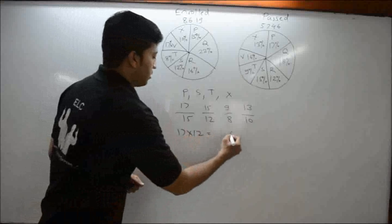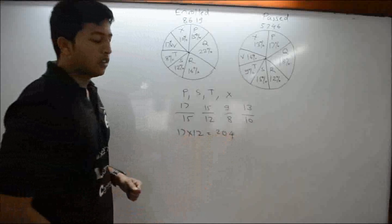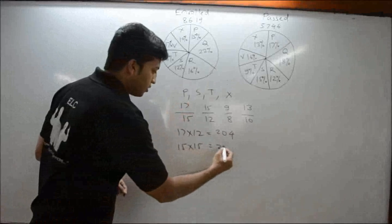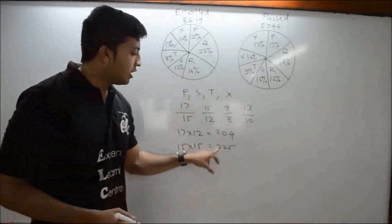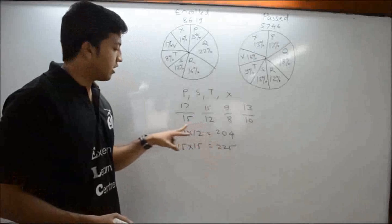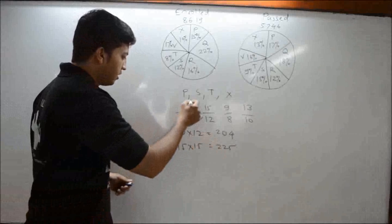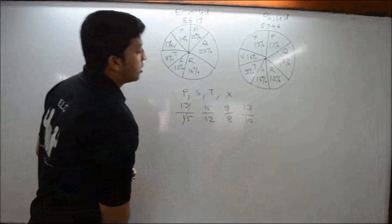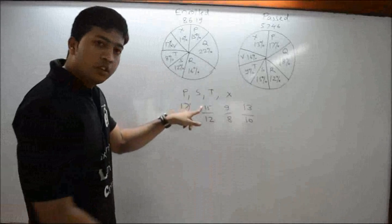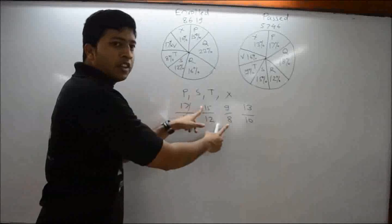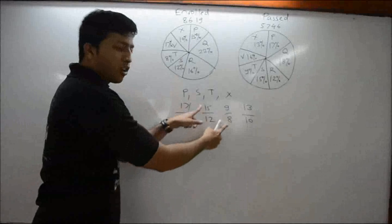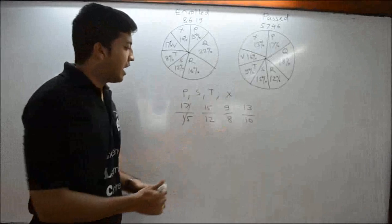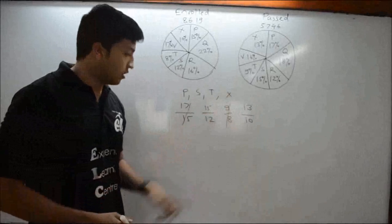Comparing 17/15 and 15/12: first product is 17 × 12 = 204; second product is 15 × 15 = 225. The second product is greater, so the second fraction (15/12) is greater — eliminate 17/15. Now compare 15/12 with 9/8: first product is 15 × 8 = 120; second product is 12 × 9 = 108. The first product is greater, so 15/12 is greater — eliminate 9/8.